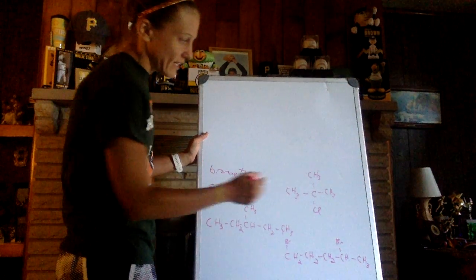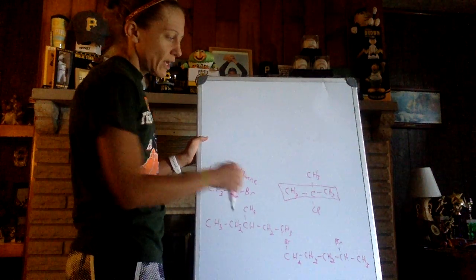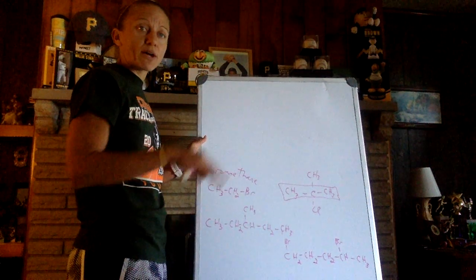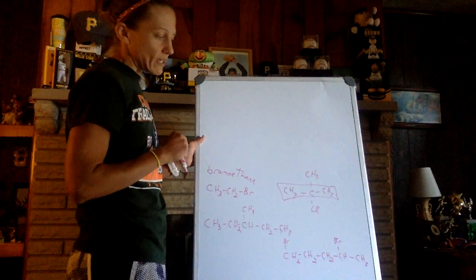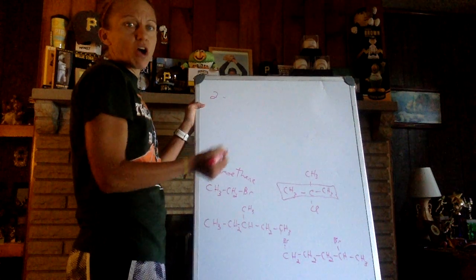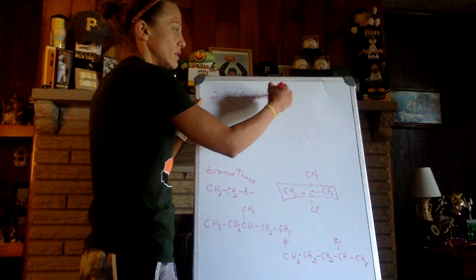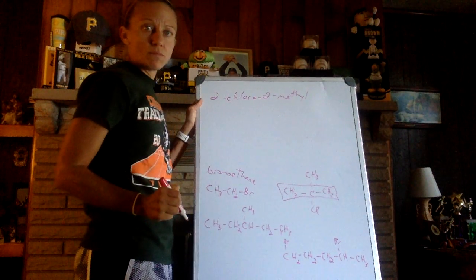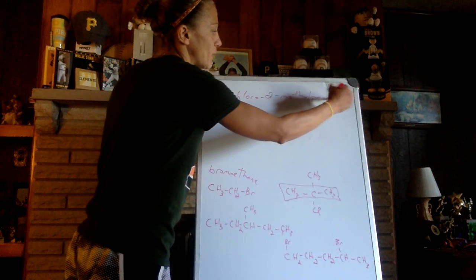This is more exciting. This looks like a three-carbon chain straight across the middle. And on the second carbon, no matter which way I count, are chlorine and CH3. So I've got, and I'm writing it up at the top so we can see, so I can write a little more comfortably. 2-chloro-2-methylpropane.